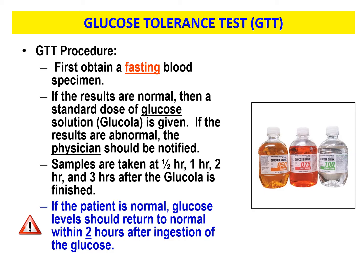Thirty minutes later, draw a sample. Then one hour, two hours, and three hours later after the glucola is finished. If the patient is normal, glucose levels should return to normal within two hours after ingesting the glucose. The patient must also keep the glucola down — they cannot vomit it up. If they do vomit, notify the physician, and the test will have to be done again another day.